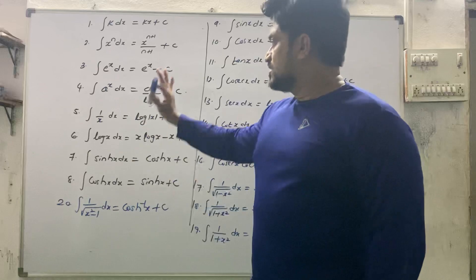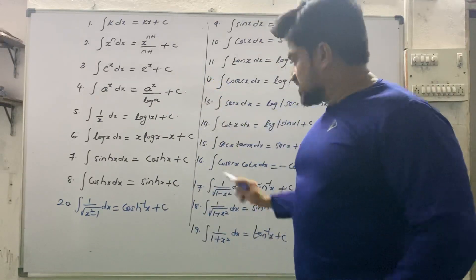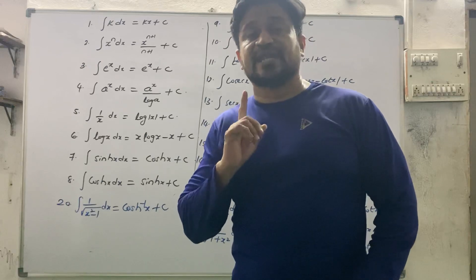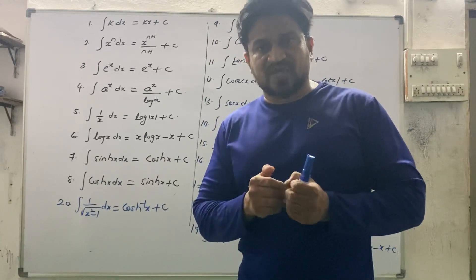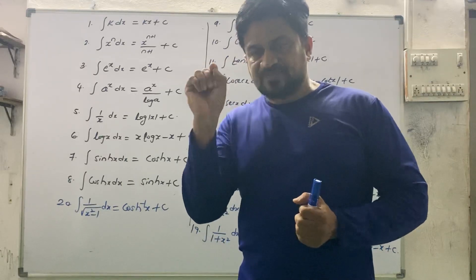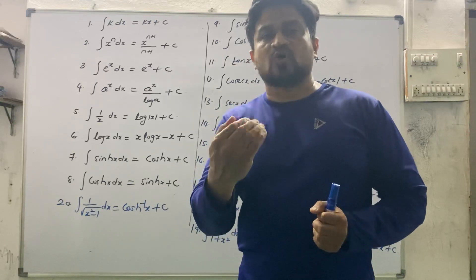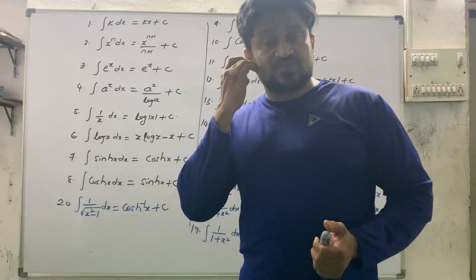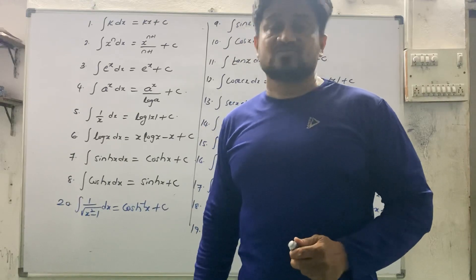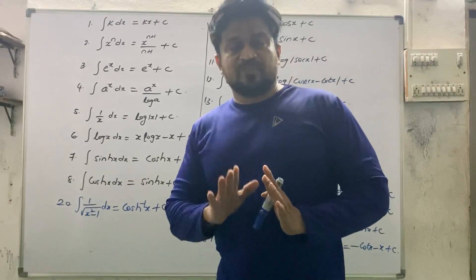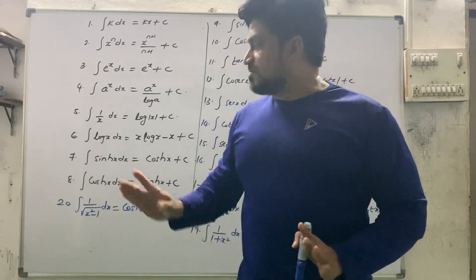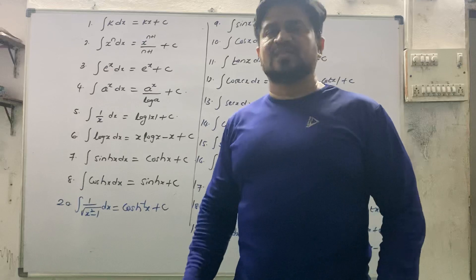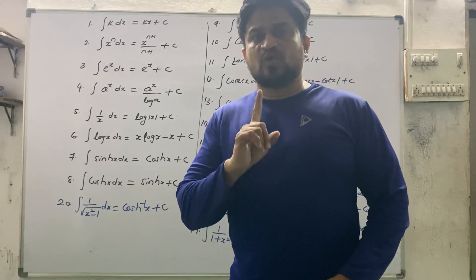Your task for today: memorize all 24 formulas. Write each formula 10 times in your notes, write your roll number and name on each page, take a photograph, and post it on your group so I can verify your work. If anyone is not doing this work, I may call you and ask the formulas on a call. If you are good in formulas, this unit is very easy. Tomorrow we are going to complete one exercise from Methods of Integration.